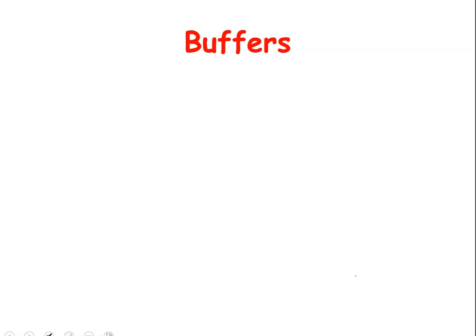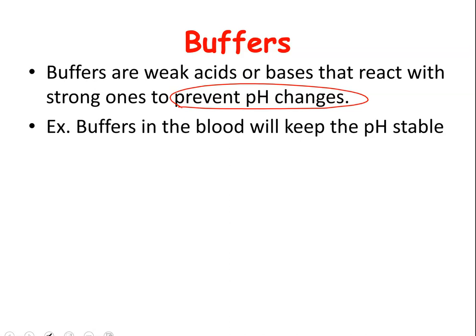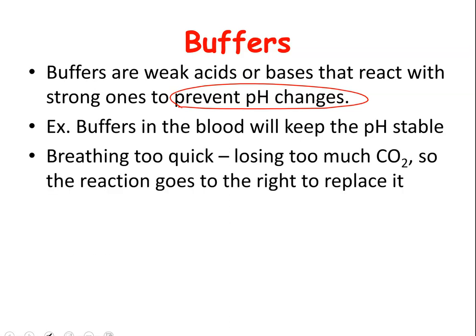Last but not least: buffers. We're not going to go into a lot of detail, but just be aware that your body has things called buffers — they're very weak acids or bases. They react with strong acids and bases, and the key thing to know is that buffers prevent your pH from changing too much. Buffers in your blood keep your pH from going out of whack. Your blood is normally a pH of about 7.3 — not quite neutral, but close.